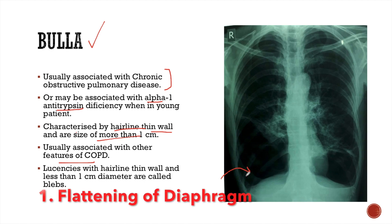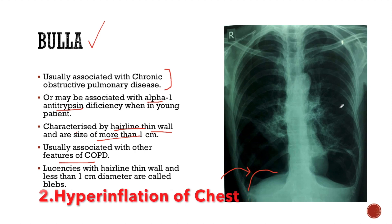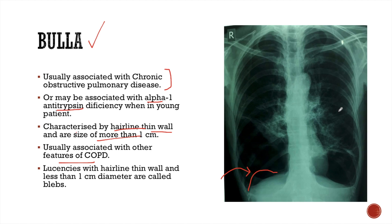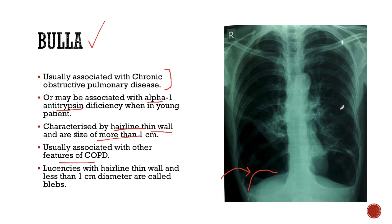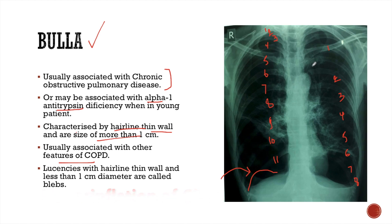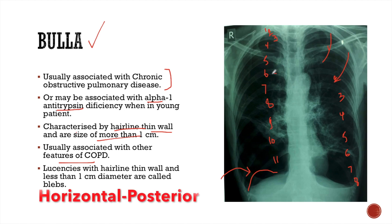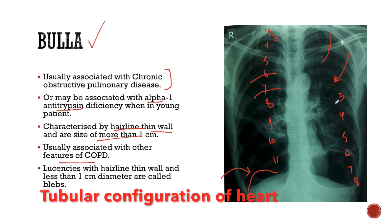Here we can see that there is flattening of the diaphragm. The diaphragm is supposed to be dome-shaped, but here it appears flat. We can also see hyperinflation of the chest. Normally we can see six anterior and ten posterior ribs in the thorax on an X-ray, but here we can see eight anterior ribs and eleven posterior ribs. These oblique ones are the anterior ribs and these horizontal ones are the posterior ribs. We can also see the tubular configuration of the heart.